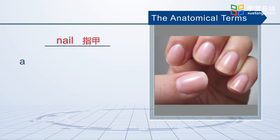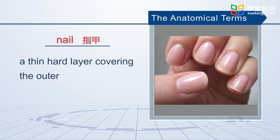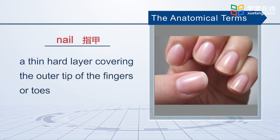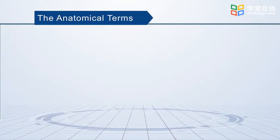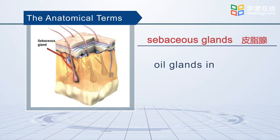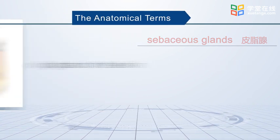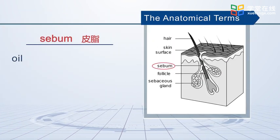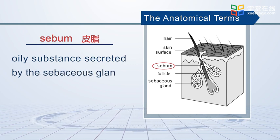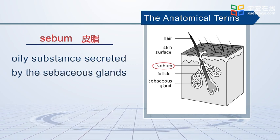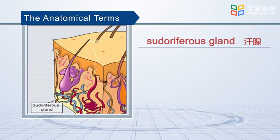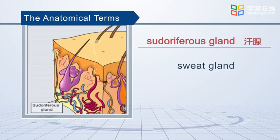Nail is the thin, hard layer covering the outer tip of the fingers or toes. Sebaceous gland refers to the oil gland in the skin. Sebum is the oily substance secreted by the sebaceous gland. Pseudoryphorose gland is the sweat gland.